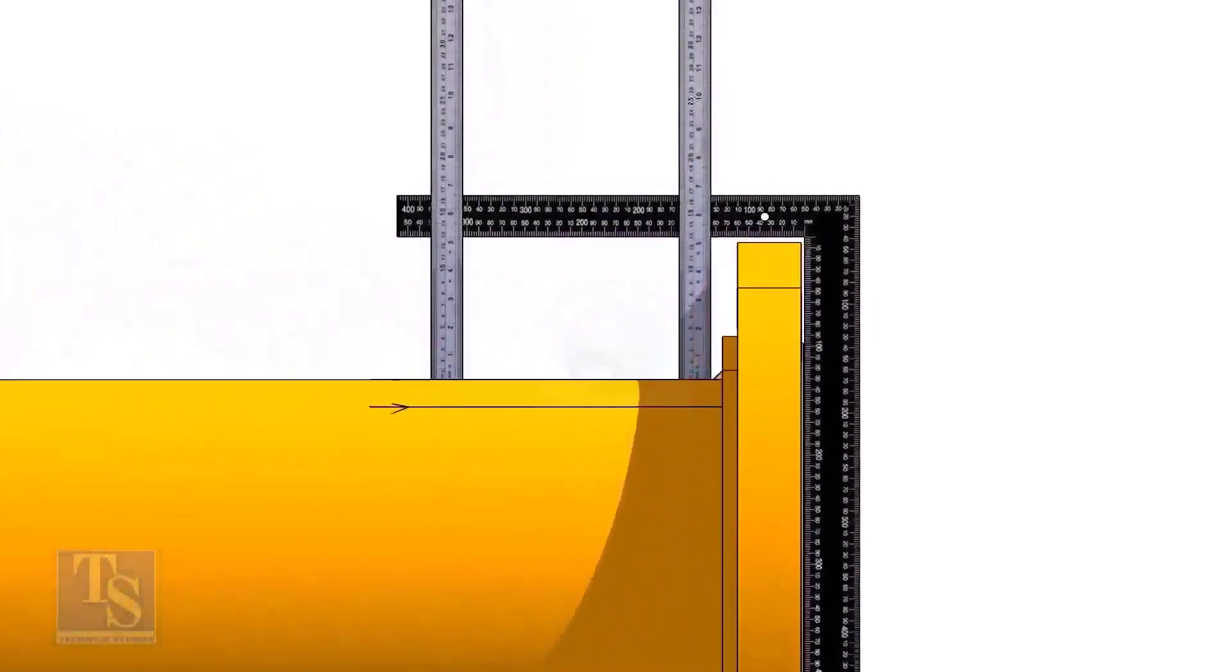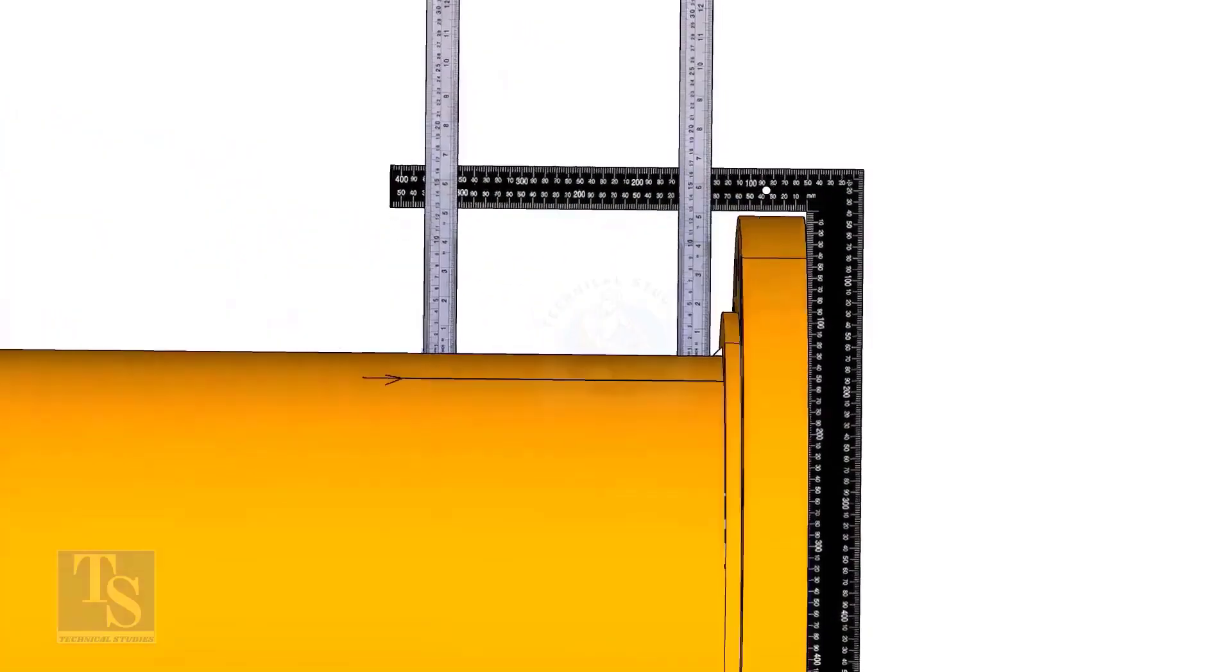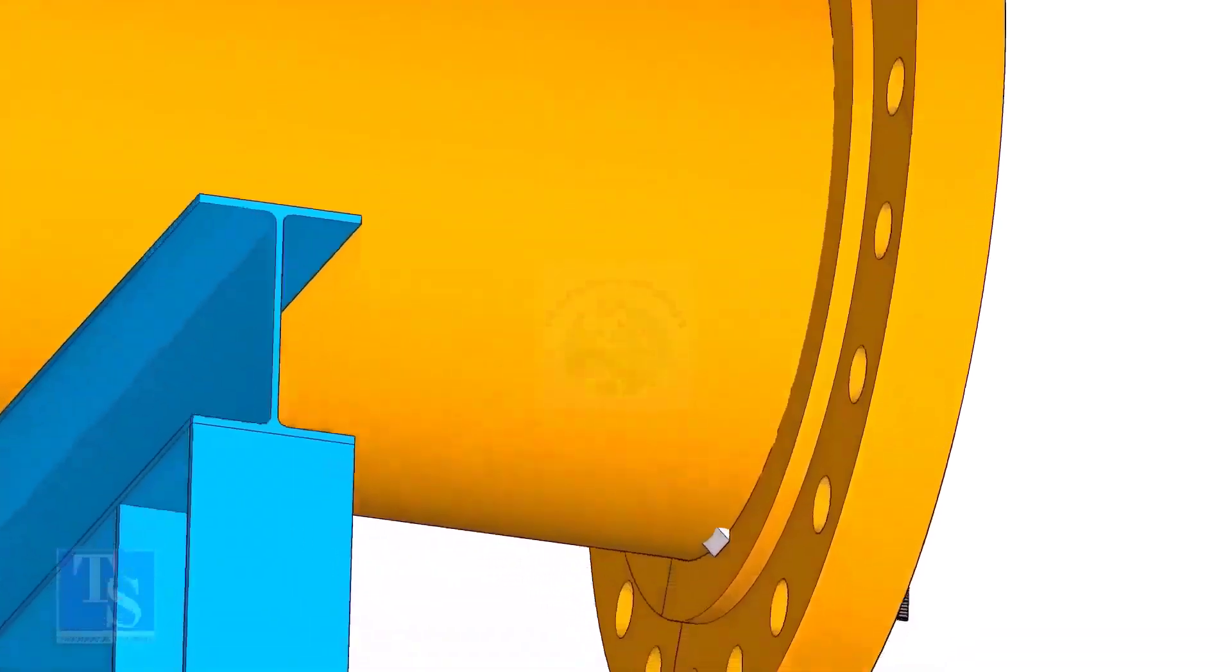Tack weld on the top of the pipe with the flange and check the squareness. If correct, tack weld at the bottom side also.